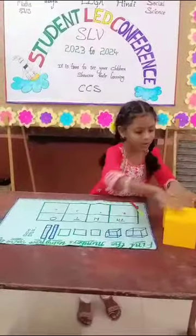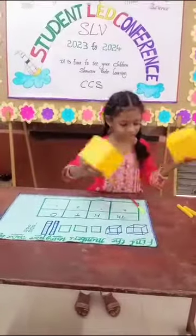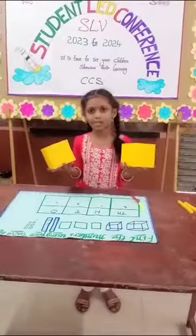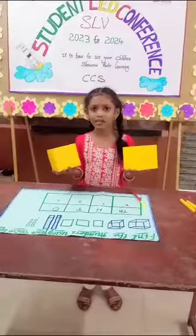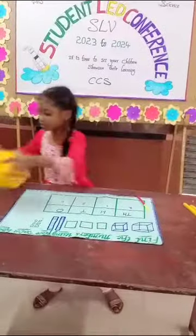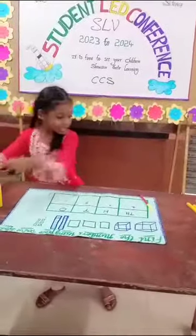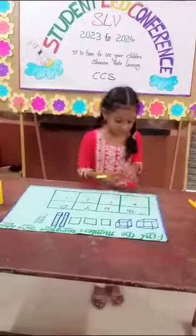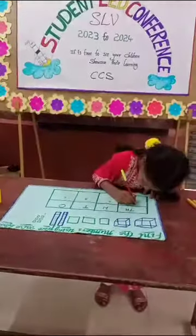There are 2 cubes. So I will take 2 cubes. They represent the thousands place. So I will write 2 in the thousands place.